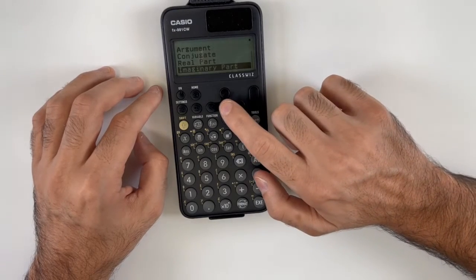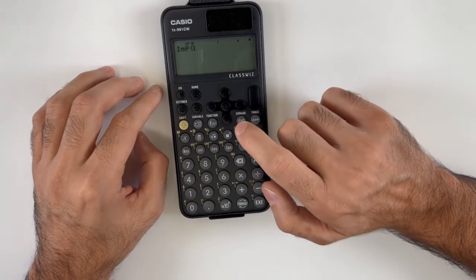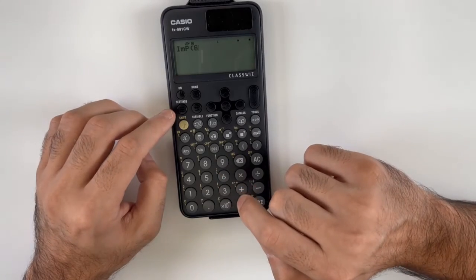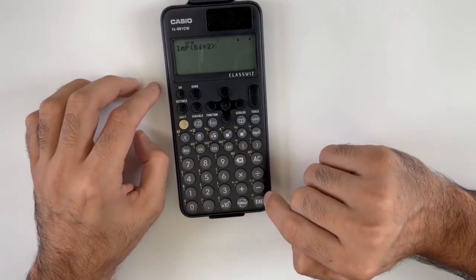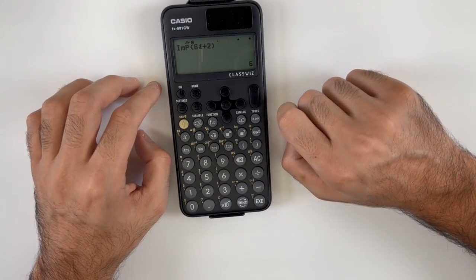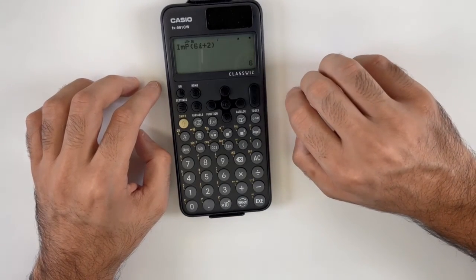Let's use the imaginary part option. Let's say the complex number is 6i plus 2. Then the imaginary part would be 6. Thank you so much.